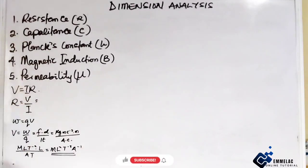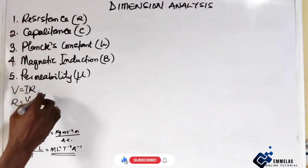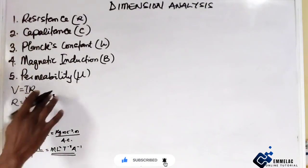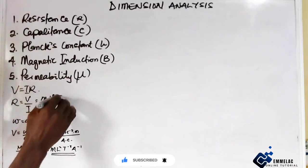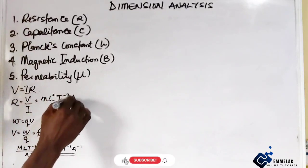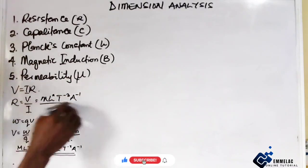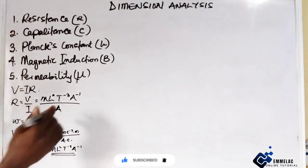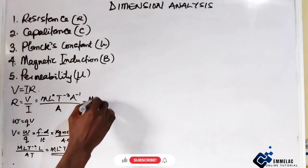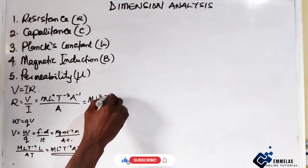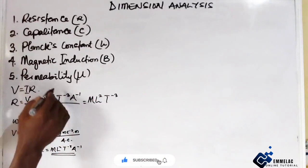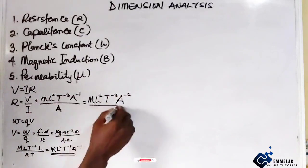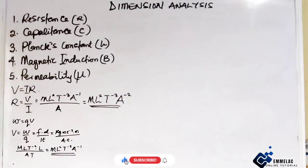Now if we plug the potential difference formula into R equals V over I, the current is A, so we have M, L raised to the power of 2, T raised to the power of minus 3, then A raised to the power of minus 1 all over A. This becomes M, L squared, T to the power of minus 3, and since minus 1 minus 1 gives minus 2, we get A raised to the power of minus 2. This is the dimensional formula for electrical resistance.